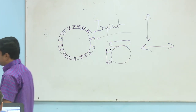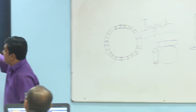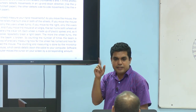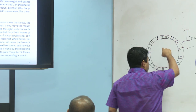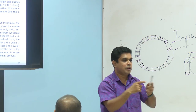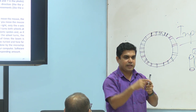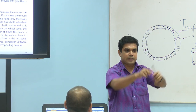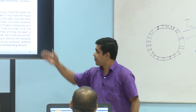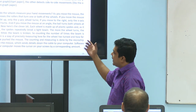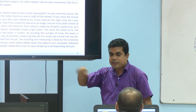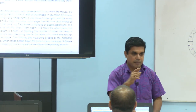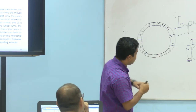Each wheel is made up of plastic spokes. As the wheel turns, the spokes repeatedly break a light beam. You can see a light source inside the mouse.